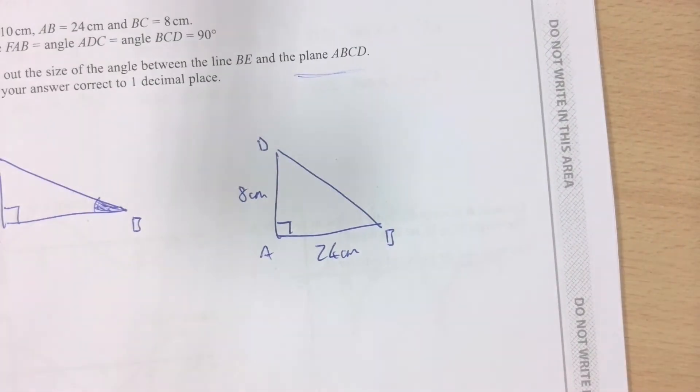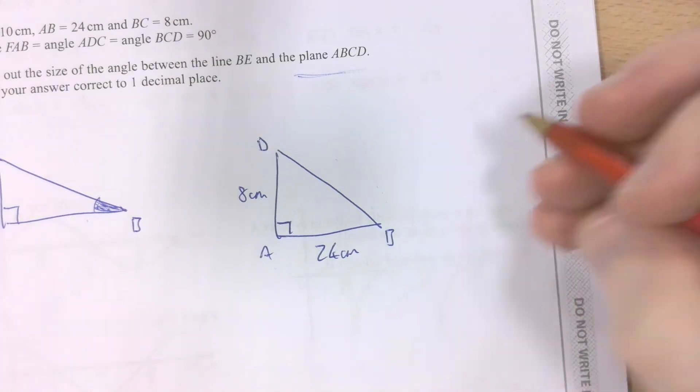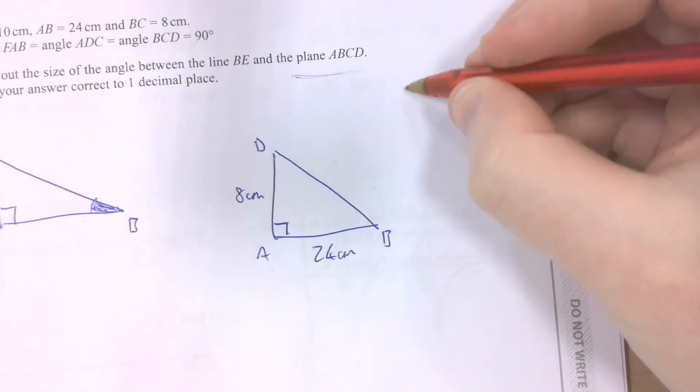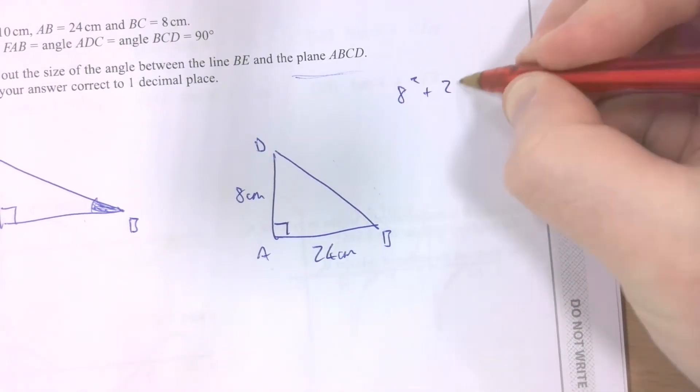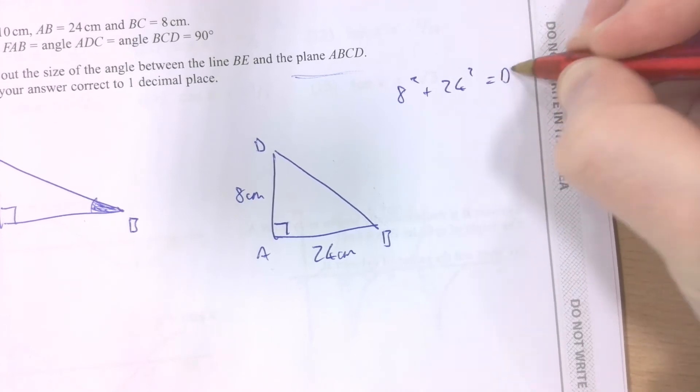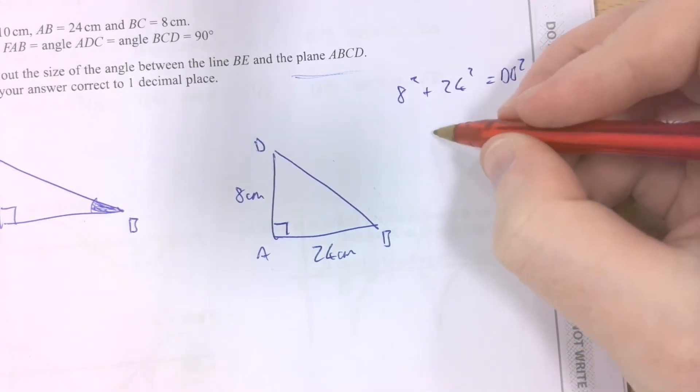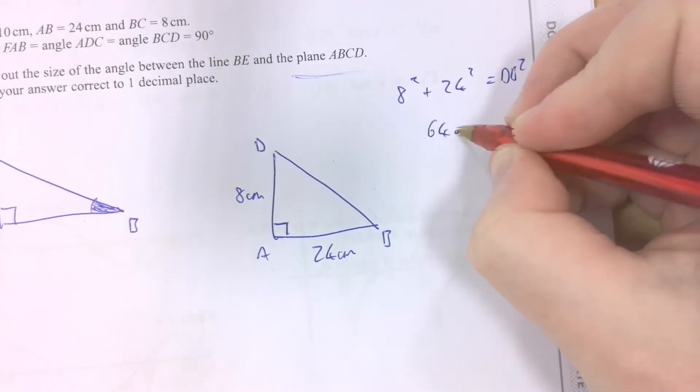So, it's Pythagoras. Let's give it a go. 24 squared plus 8 squared makes 640. So, this length here, let me write out what I've done there.